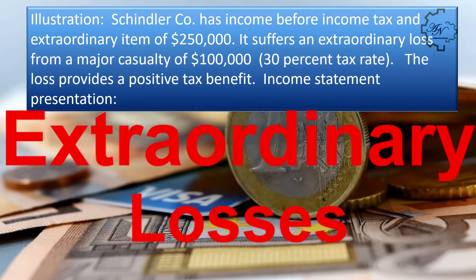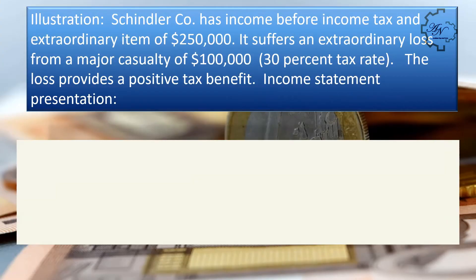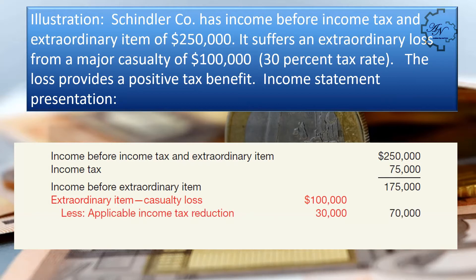Extraordinary losses illustration: Schindler Co. has the same income before income tax of $250,000 but suffers an extraordinary casualty loss of $100,000, with a 30% tax rate. The loss provides a positive tax benefit. Income before extraordinary item remains $175,000. Extraordinary loss net of tax = $100,000 − $30,000 = $70,000. Net income = $175,000 − $70,000 = $105,000.